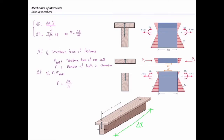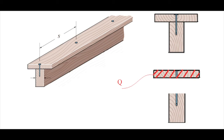Putting it all together, the design equation is: ΔF = ΔM·Q/I (or the equivalent V·ΔX form) must be smaller than n·v_n, where n = ΔX/s. Sometimes two nails are used at the same cross-section, in which case we multiply by two, giving 2·(ΔX/s)·v_n. That is how we derive this equation. Now let me return to the problem at hand.